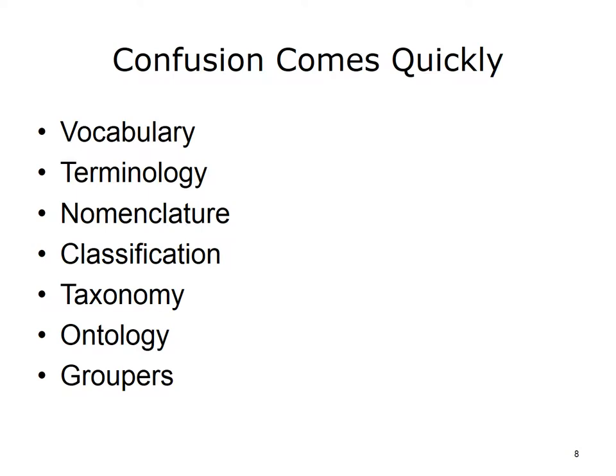A taxonomy is a practice and science of classification. Taxonomies are typically arranged in a hierarchical structure and exhibit parent-child relationships. An ontology consists of basic categories of being and their relations. It deals with questions concerning what entities exist, how such entities can be grouped, related within a hierarchy, and subdivided according to similarities and differences. An ontology is a formal representation of a set of concepts within a domain and the relationships between those concepts. A grouper groups together diagnoses and procedures that are similar in resources used for billing purposes — an example is DRG.